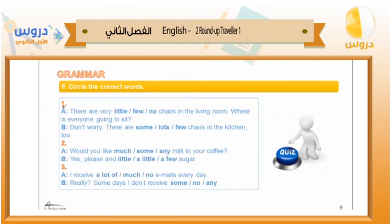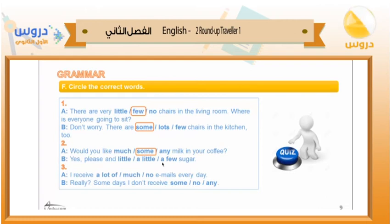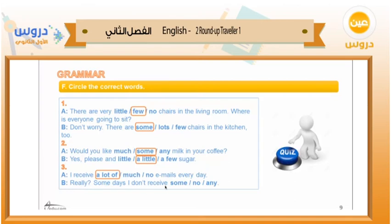Grammar. Circle the correct words. Number one: there are very few chairs in the living room — there are very few chairs. Number two: don't worry, there are some chairs in the kitchen — there are some. Number three: would you like some milk? Yes please, and a little sugar. Number four: I receive a lot of emails every day. On some days I don't receive any.